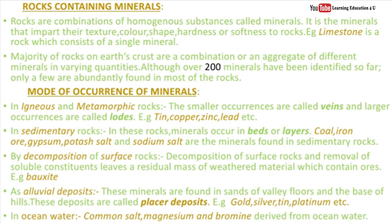Now, the mode of occurrence of minerals. Minerals in smaller quantities are found in veins, and in large quantities in lodes. These include tin, copper, zinc, lead, etc. In sedimentary rocks, minerals are made in beds or layers. This includes coal, iron ore, gypsum, potash salt, and sodium salt.